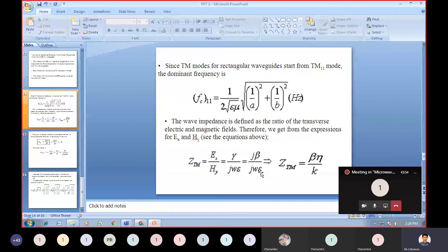Since TM mode for rectangular waveguide starts from TM₁₁, we call that the dominant mode. The dominant mode frequency is f_c₁₁ equals 1/(2√(εμ)) times √((π/a)² plus (π/b)²).